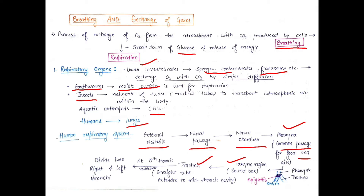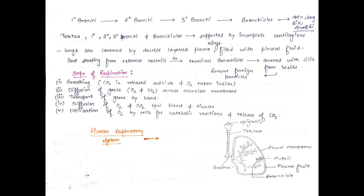From the larynx, air goes to the trachea. After the trachea, it bifurcates into the primary bronchi. Primary bronchi bifurcate into secondary bronchi. Secondary bronchi bifurcate into tertiary bronchi. Tertiary bronchi bifurcate into bronchioles, and the bronchioles end in bag-like structures called alveoli, where O2 and CO2 exchange takes place. The trachea, primary, secondary, and tertiary bronchi and bronchioles all have incomplete cartilage rings present.